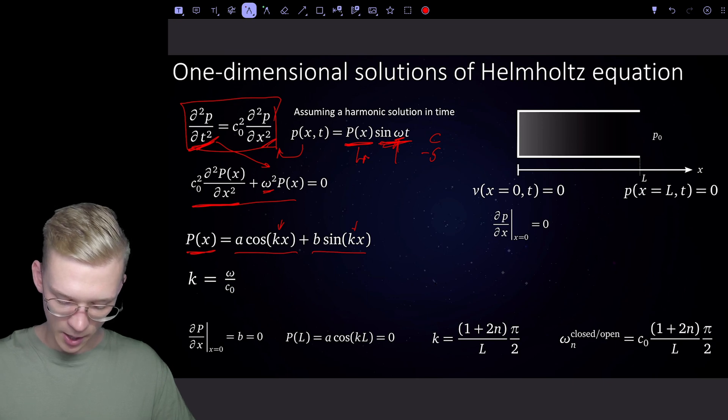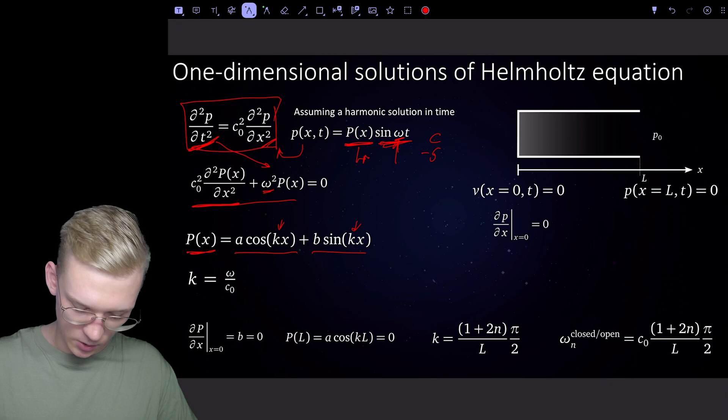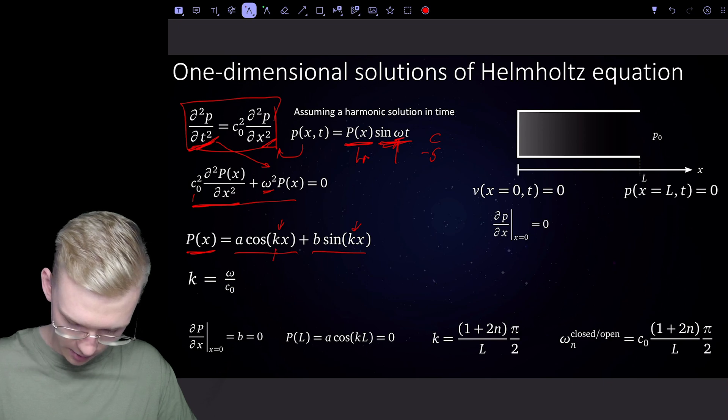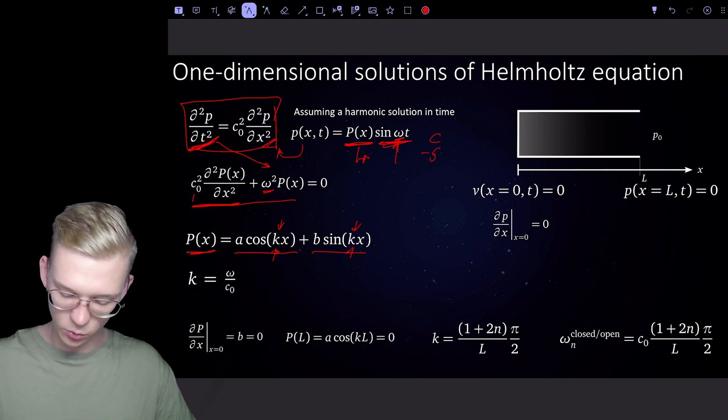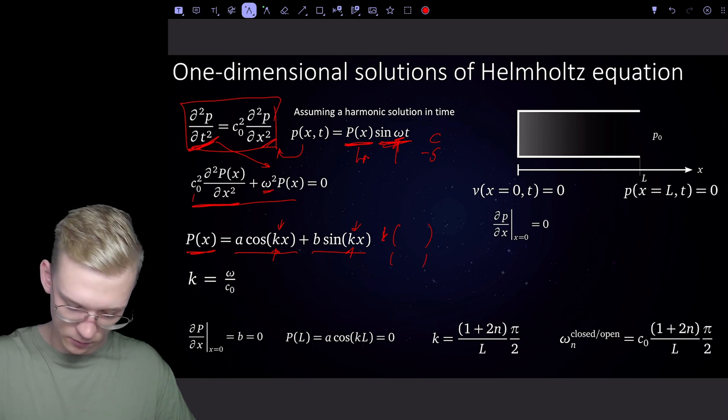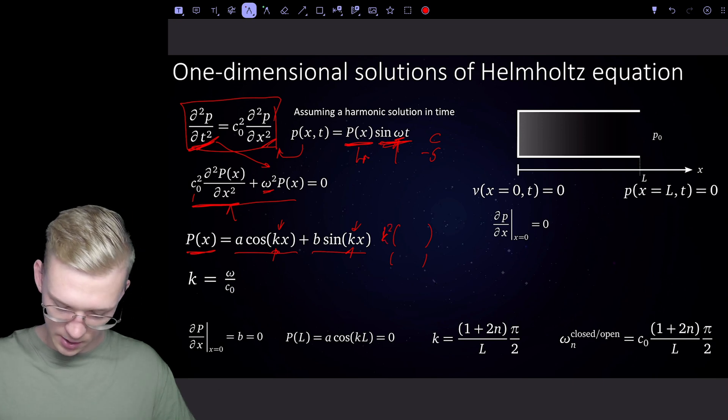So we can derive this function twice and we will see that we have a k coming here, so a k from here and a k from here. We derive it once, we have a k in the front. If we derive it again, because we have to do two derivatives, we have a k squared.